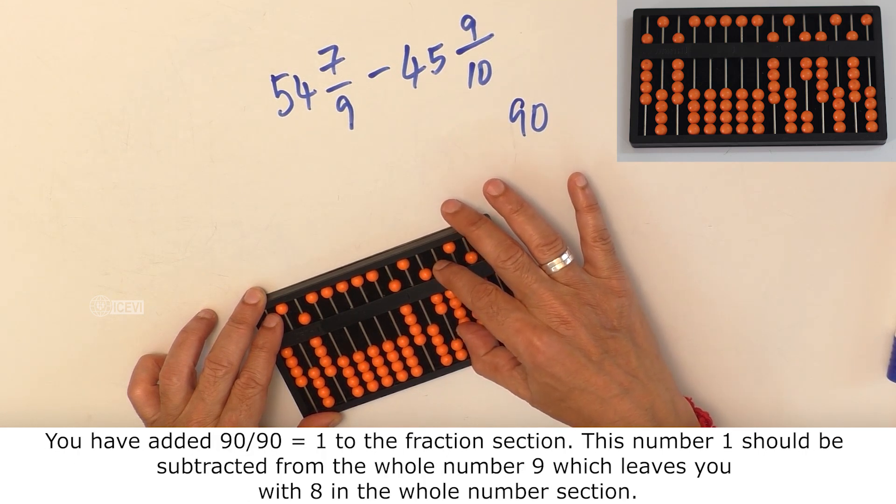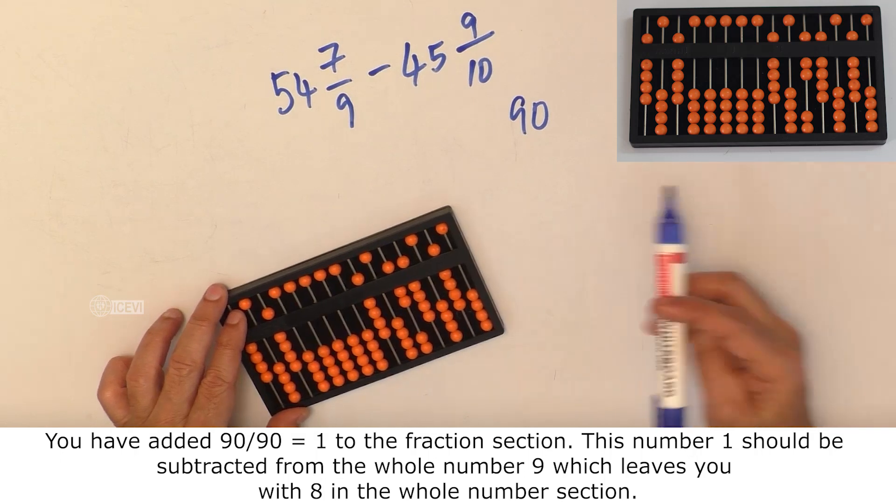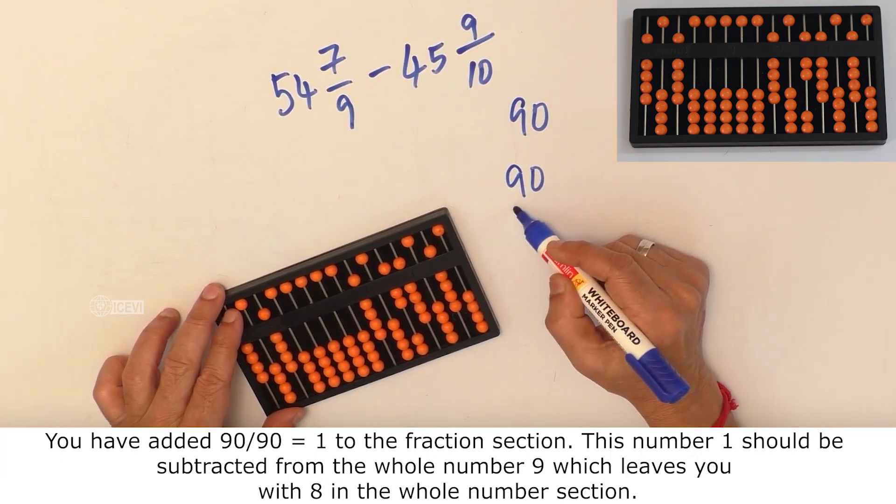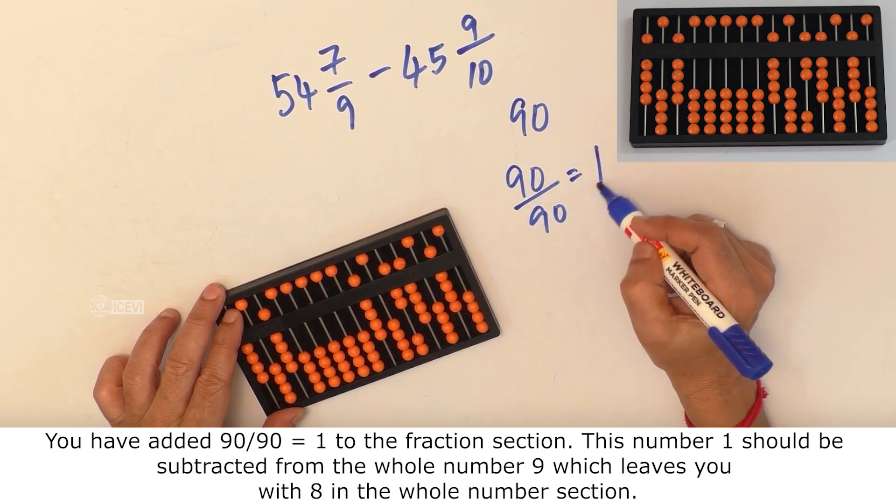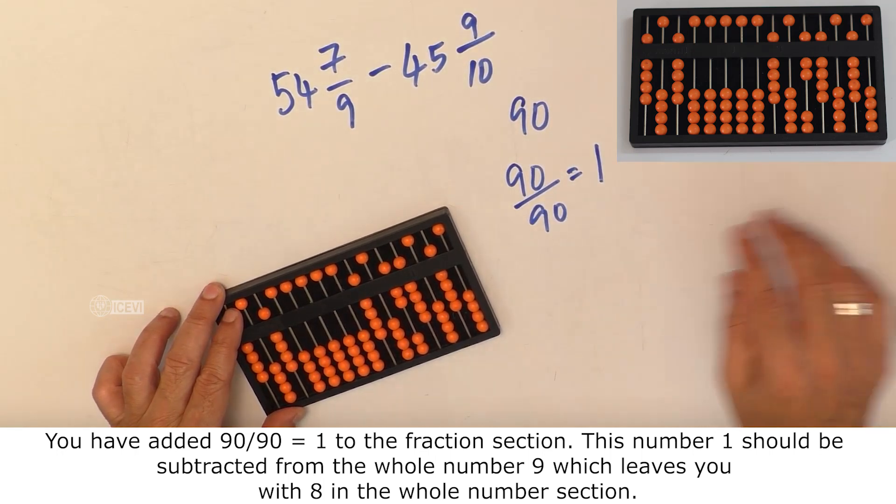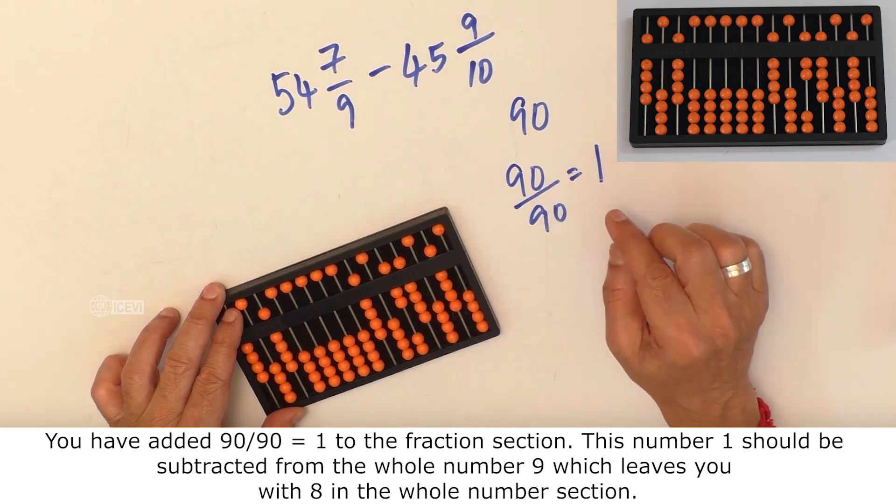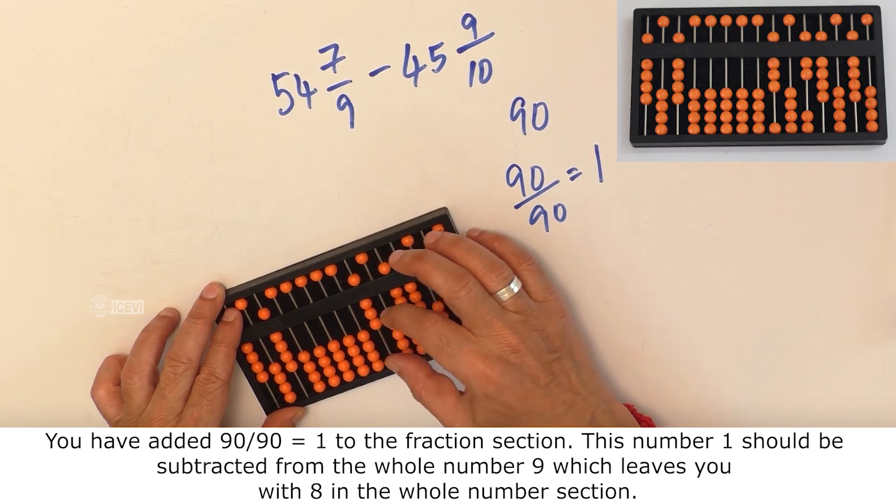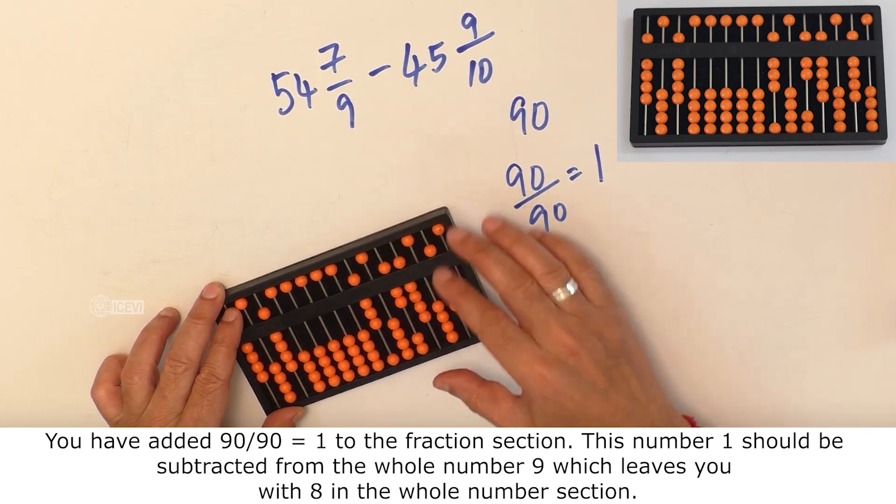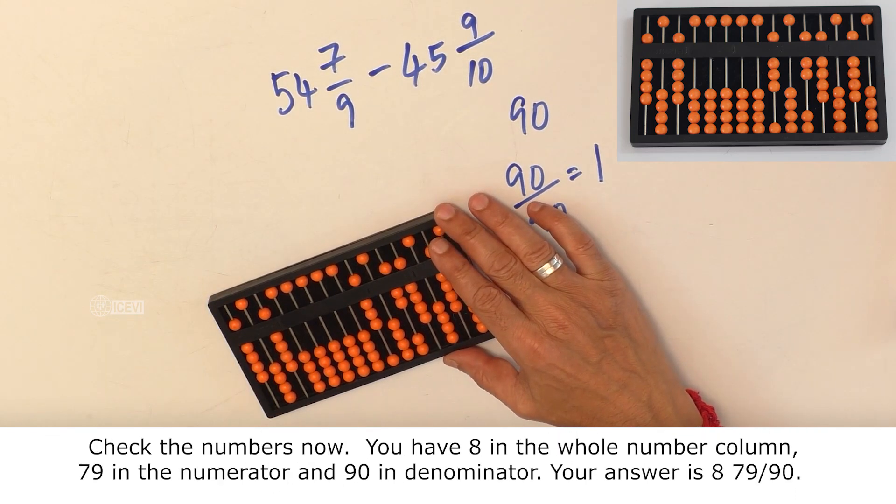What we have done: we have added 90, that is 1, to the fraction section. This number 1 should be subtracted from the whole number 9, which leaves you with 8 in the whole number section.